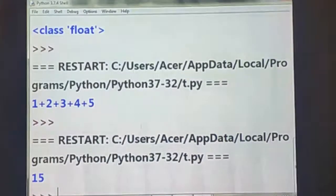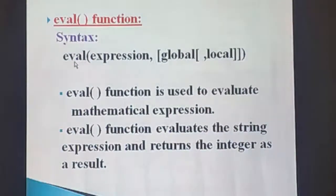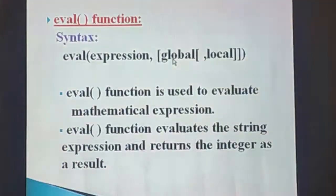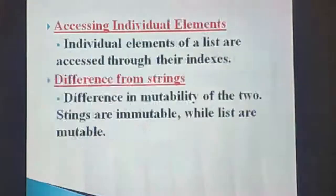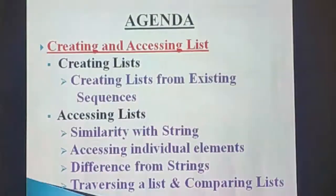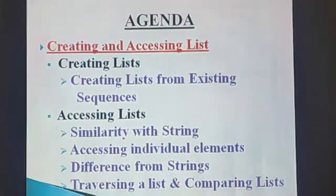The syntax for the eval function is: eval(expression, global, local), where global and local are optional — global represents a dictionary and local is a mapped object. The expression is a string expression. So, in this class we covered creating and accessing lists, including many subtopics. I hope you understood. We will see the next topic in the next class. Thank you, students.